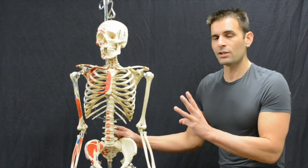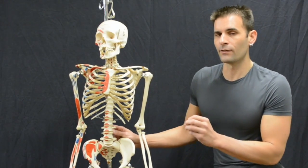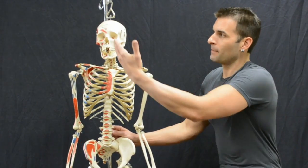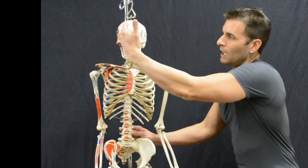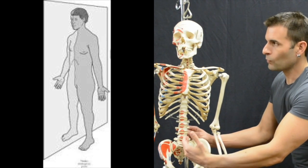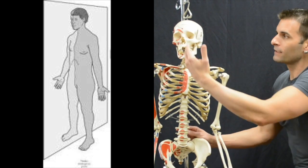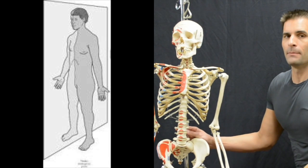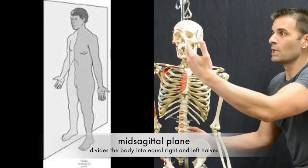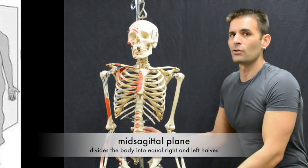Now we're going to make three sections to define different areas of the body. If I was to take an imaginary knife and divide this body into right and left halves right down the middle, that type of cut would be known as a mid-sagittal cut and therefore is along the mid-sagittal plane.